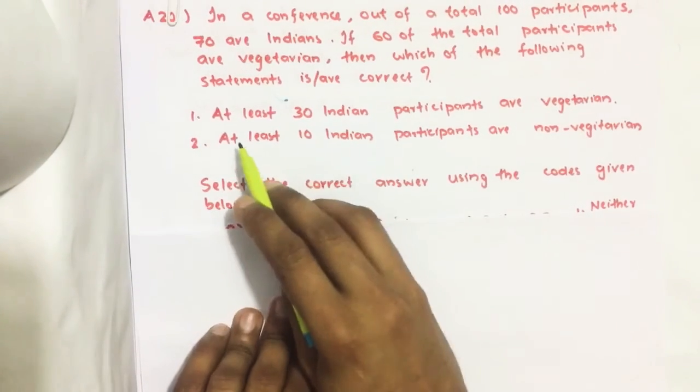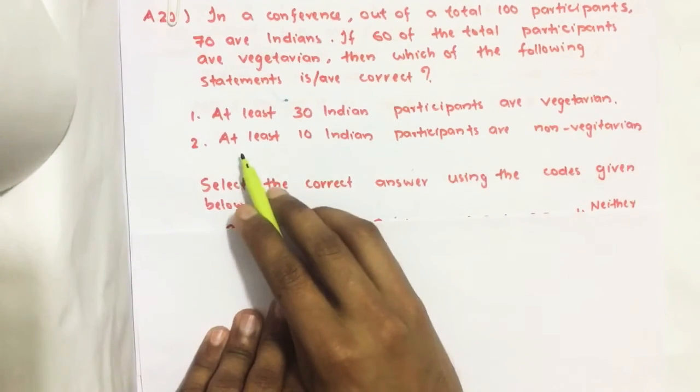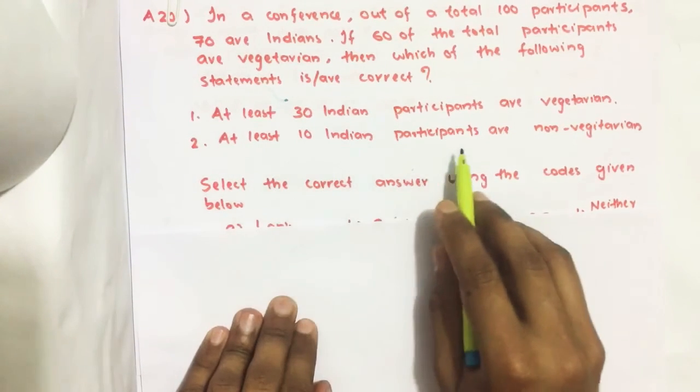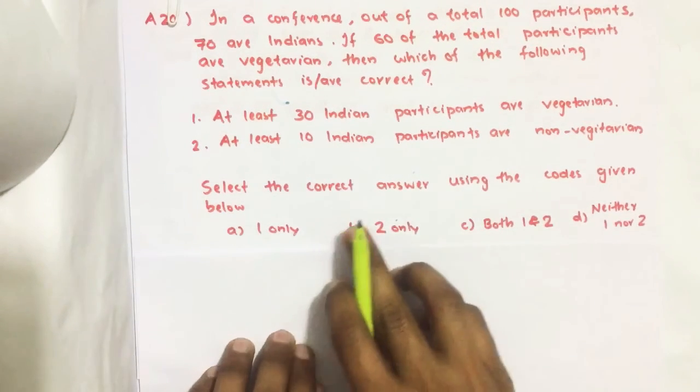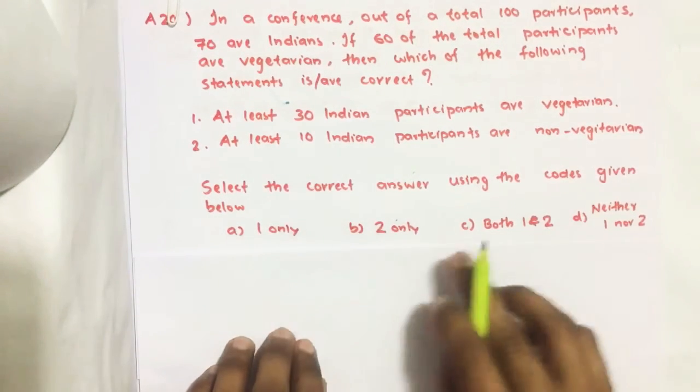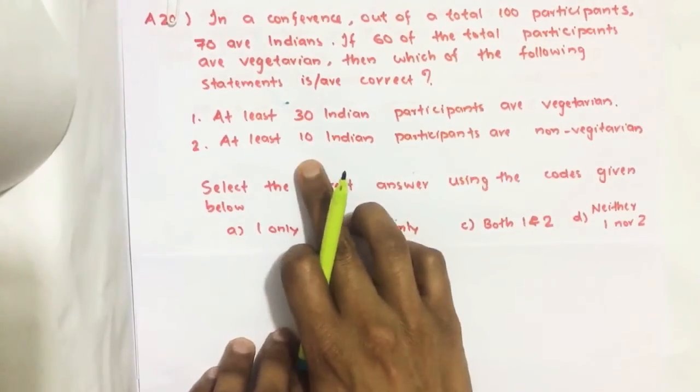There are two statements: at least 30 Indian participants are vegetarian. Second statement is at least 10 Indian participants are non-vegetarian. And we have options select the correct answer using the codes given below.